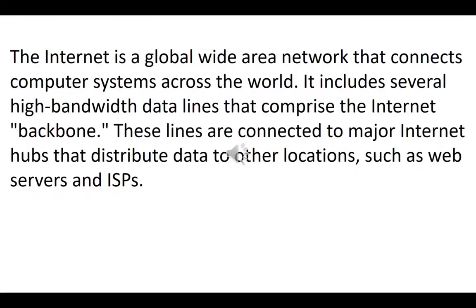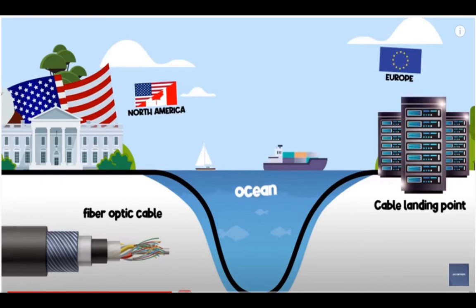The internet is a global worldwide network that connects computer systems across the world. It includes several data lines that comprise the internet platform. These lines are connected to major internet organizations that distribute data to other locations such as web servers and ISPs. The information you request when you're browsing the internet is being sent to you over a fiber optic cable, and this information is distributed on different servers around the world.